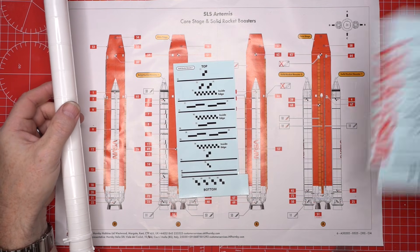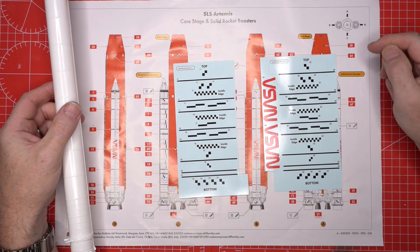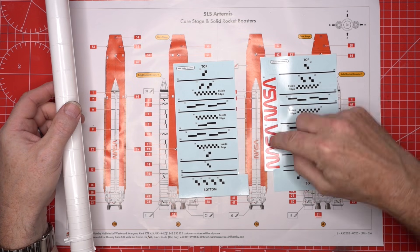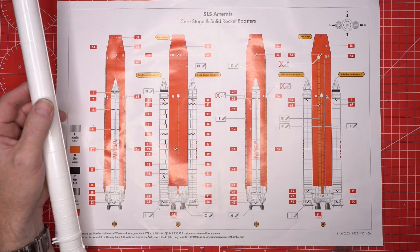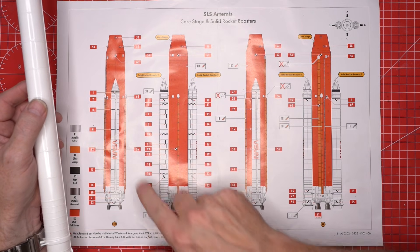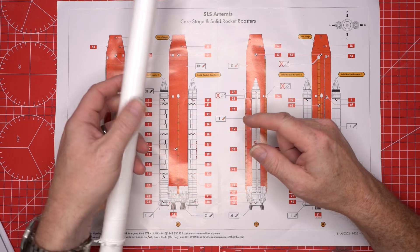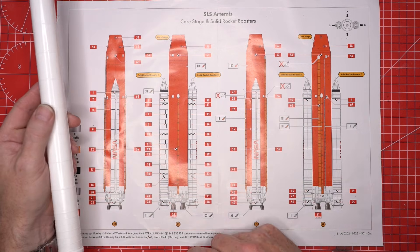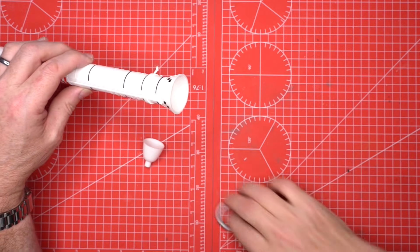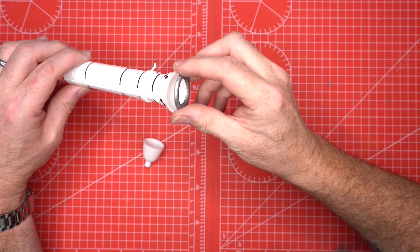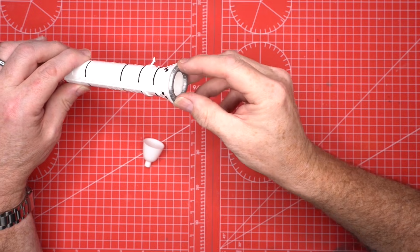We add the small brackets, vents, and attachment points, giving the boosters their distinctive stepped geometry. Each decal is placed with intention. Booster 1 and booster 2 differ slightly, so we pay attention to their orientation. The stripes and markings transform the boosters into the recognizable SLS hardware. We fit the final nozzles at the base, completing the assembly.